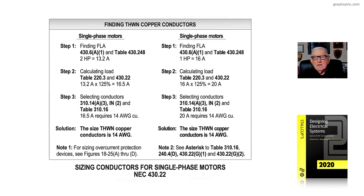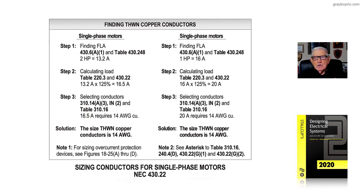Following the references of Table 220.3 over to 430.22 in Part 2, we apply the 125% rule times the Step 1 full-load current of 16 amps, and we come up with 20 amps.